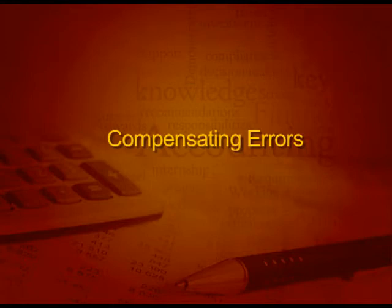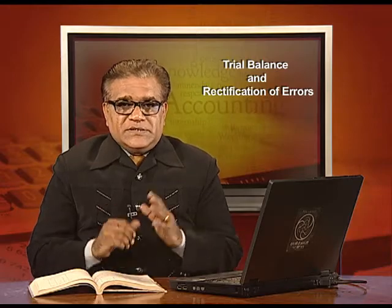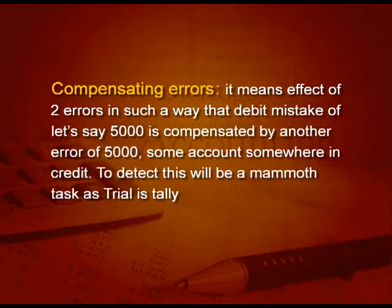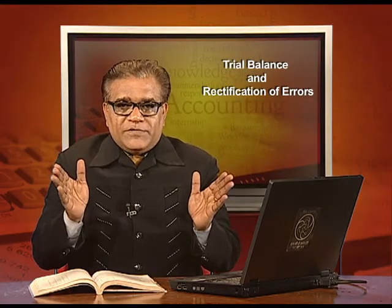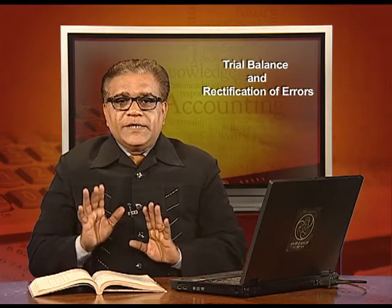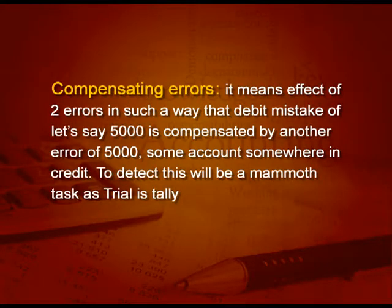Coming to the last error: compensating error. It is a very difficult error to find out. It means the effect of two errors cancel each other — a debit mistake of, say, 5000 is compensated by another error of 5000 in credit somewhere. Both mistakes are 5000, one in debit and one in credit. To detect this will be a mammoth task as the trial is tallied. Before rectifying these errors, we must first know how to find them, because unless you know what the mistake is, how will you correct it.